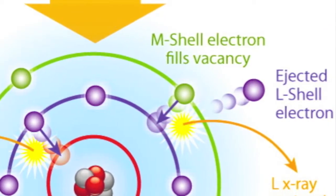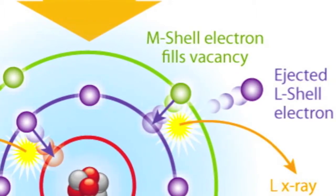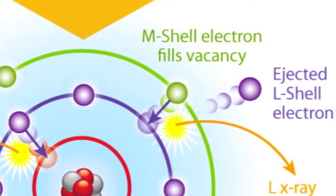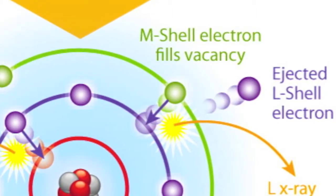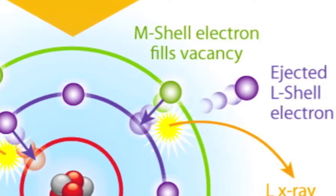When it fires that retro rocket, that energy that it gives off is called two things. A fluoresced x-ray, hence x-ray fluorescence, but more important, it's called a characteristic x-ray.